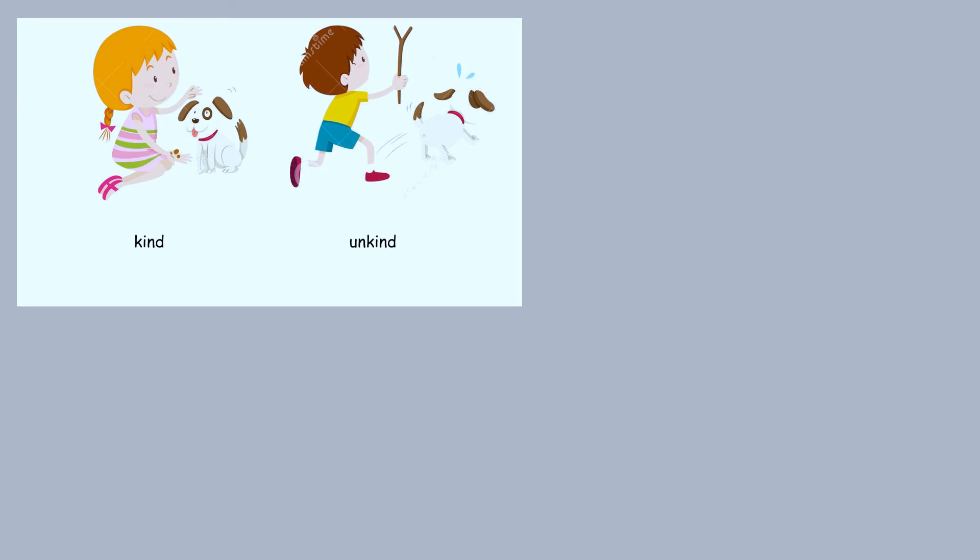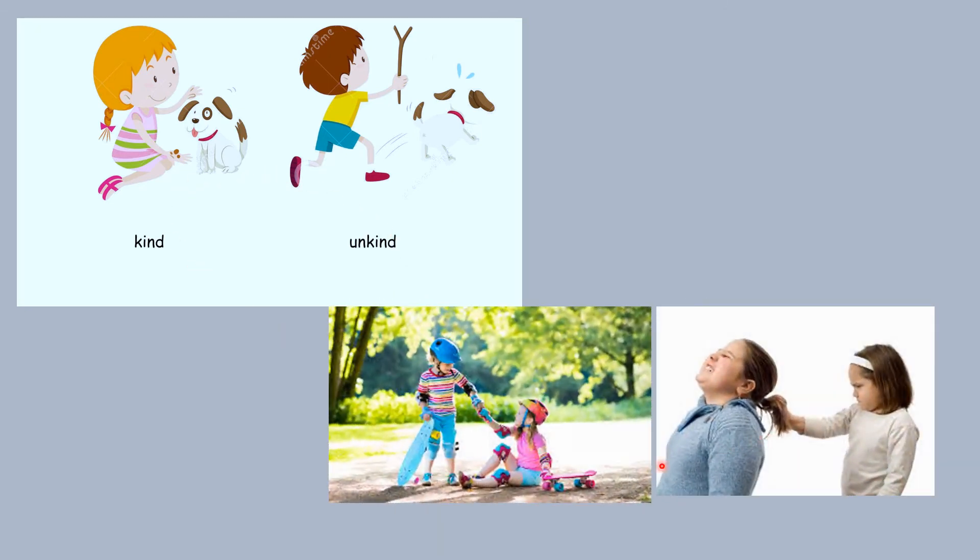Kind. Unkind. This girl is kind. This boy is unkind. These two pictures also tell you the same meaning. This girl is being kind to her. She has fallen down, so she is helping her out. But this girl is unkind. She is pulling this little girl's hair, which is not a nice thing to do. So kind and unkind.